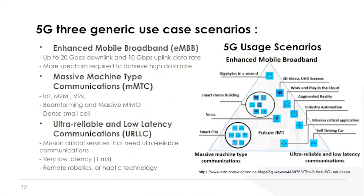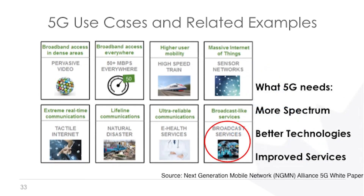5G has three main objectives: enhanced mobile broadband for high data rate, massive machine type communication for IoT and vehicle-to-everything, and ultra-reliable low latency communications. Among eight services that 5G carriers and manufacturers point to, one is broadcasting services. They know broadcast is important for the future broadband wireless system — it's on their to-do list, but it hasn't been done yet.